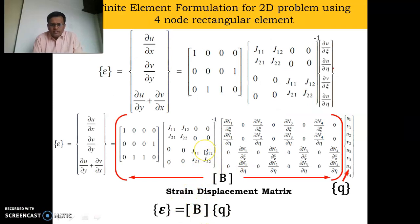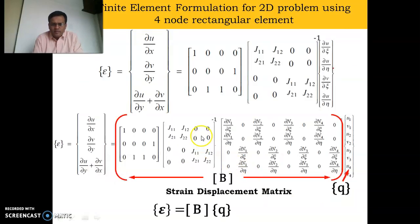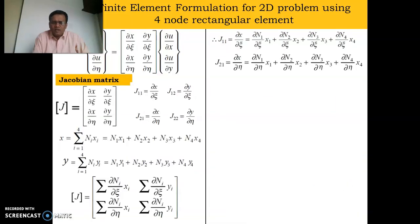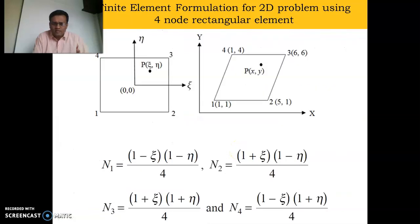Once you calculate j11, j12, j21, j22, all coefficients of the Jacobian matrix are obtained. Taking the inverse of the Jacobian matrix gives further numerical values. For the computer, multiplying these numerical matrices is straightforward. These matrices are multiplied to obtain the strain-displacement matrix equations. Everything depends on the shape functions and xy coordinates taken from the mesh geometry, and once calculated, the complete strain-displacement matrix can be evaluated.